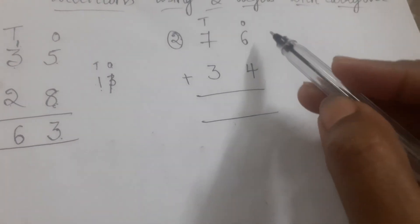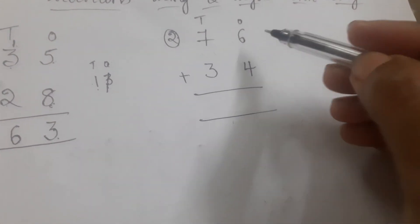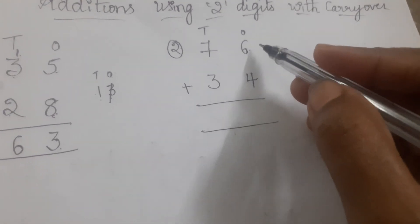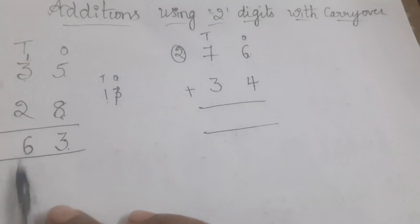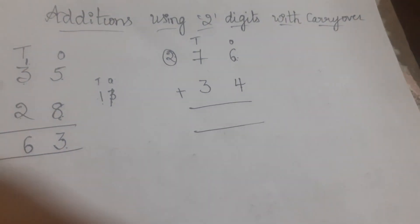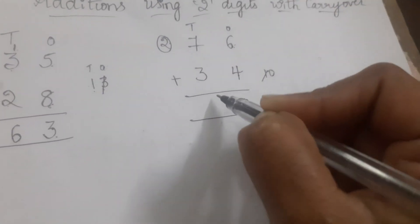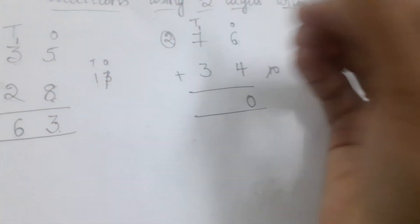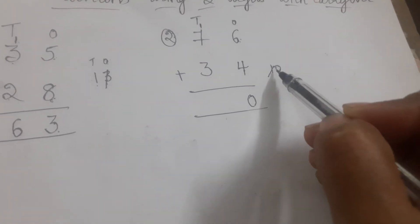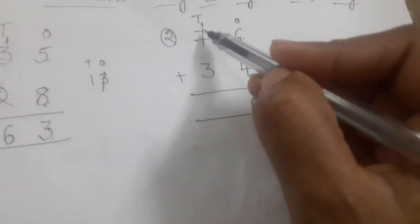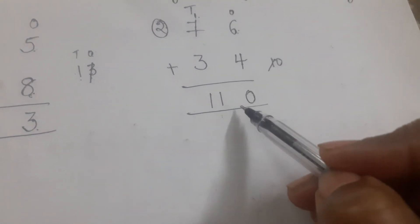First we have to add the ones column. In the ones column, six is bigger than four. That's why we keep six in mind and open four fingers. Six, after seven, eight, nine, ten. Write zero in ones place, one in tens place. Don't write one here because one is in tens place. Seven plus one is eight; eight plus three is nine, ten, eleven. Write eleven here. The answer is 110.